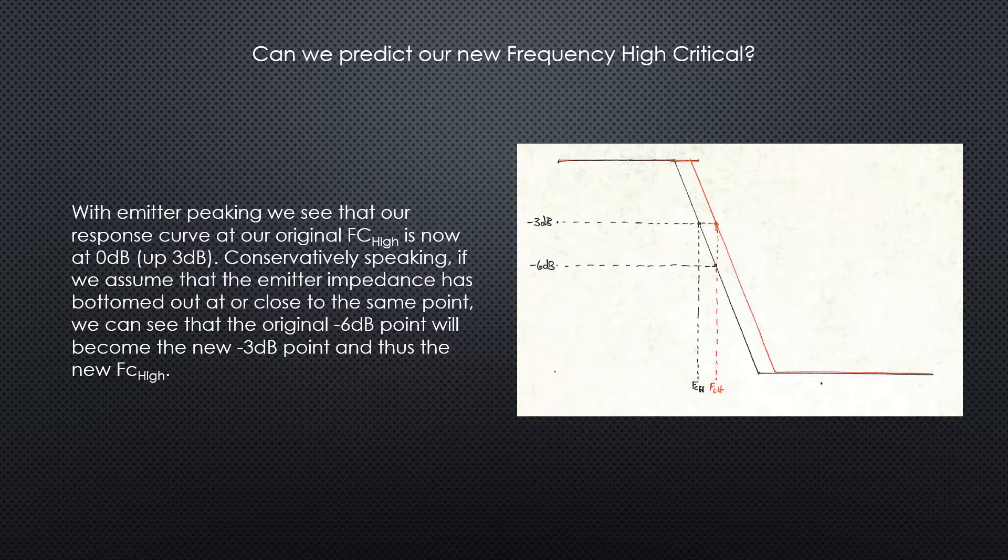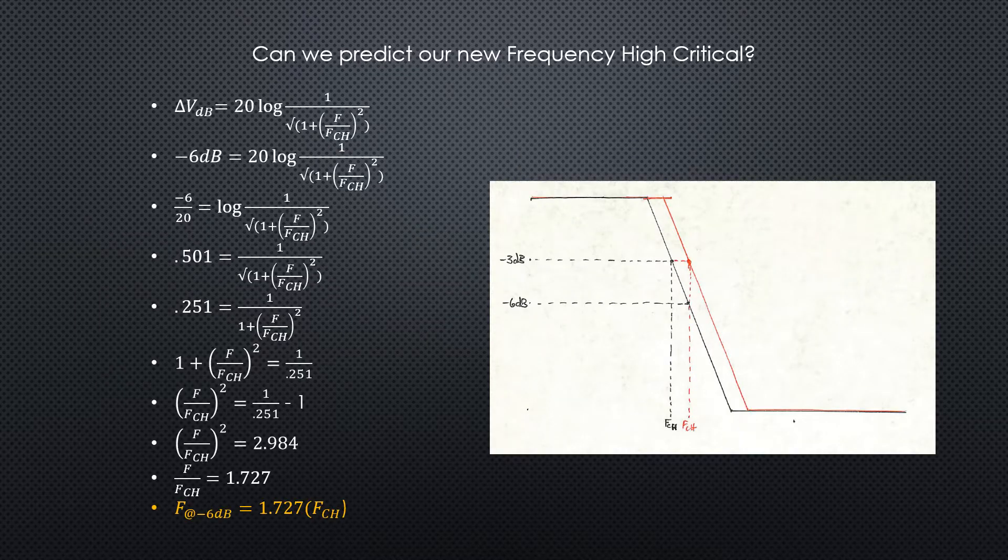So does it make sense then that the original six dB point on the original curve, if the three dB point shifted up three dB, would the six dB point also shift up three dB and therefore become the new frequency high cutoff point?